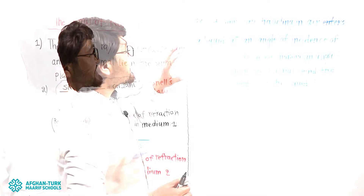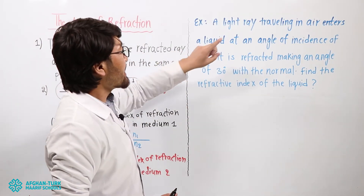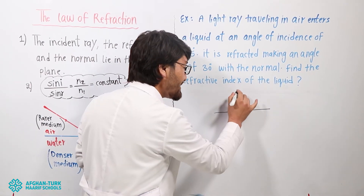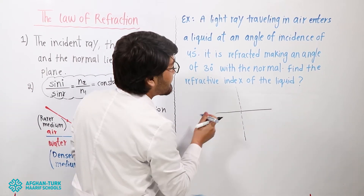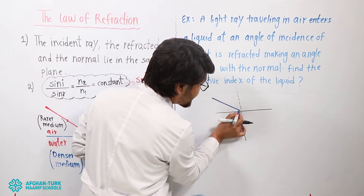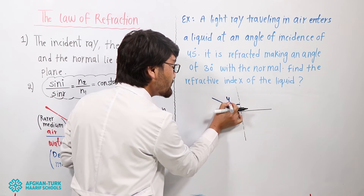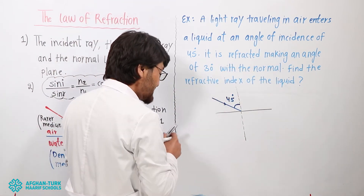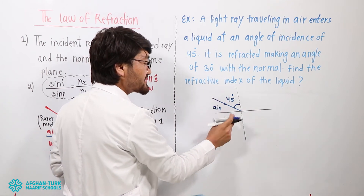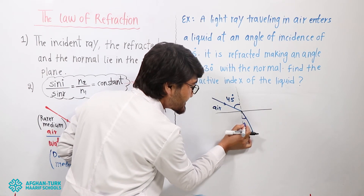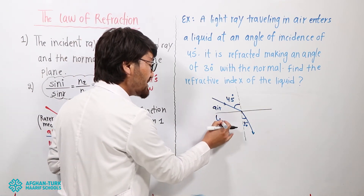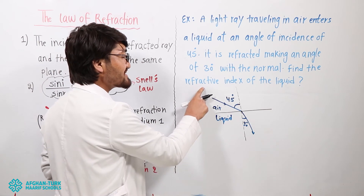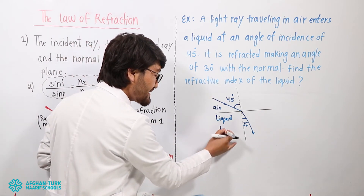Let's do some examples about the law of refraction. A light ray traveling in air — let's draw the figure. This is the normal. The light ray travels in air, and the first medium is here. The angle of incidence is 45 degrees. When light travels from air to a liquid, the angle of refraction is 30 degrees. The liquid may be water, oil, or something else. The question asks: find the refractive index of the liquid. That is n2, and n1 is for air.